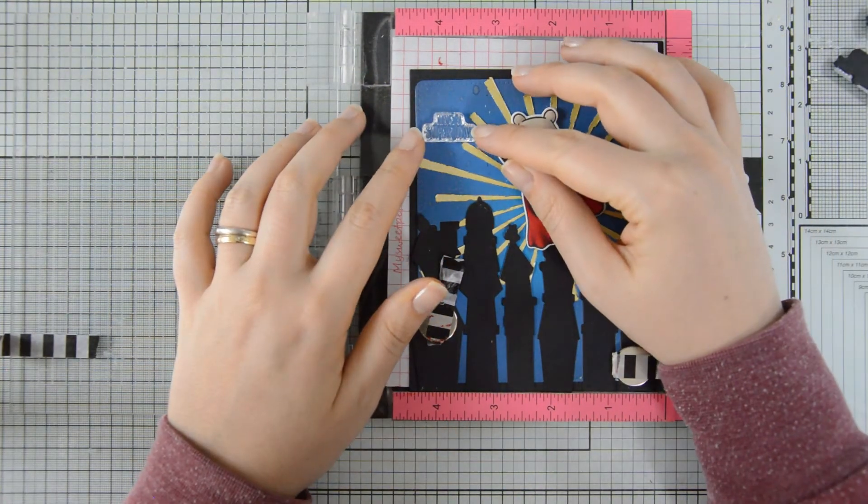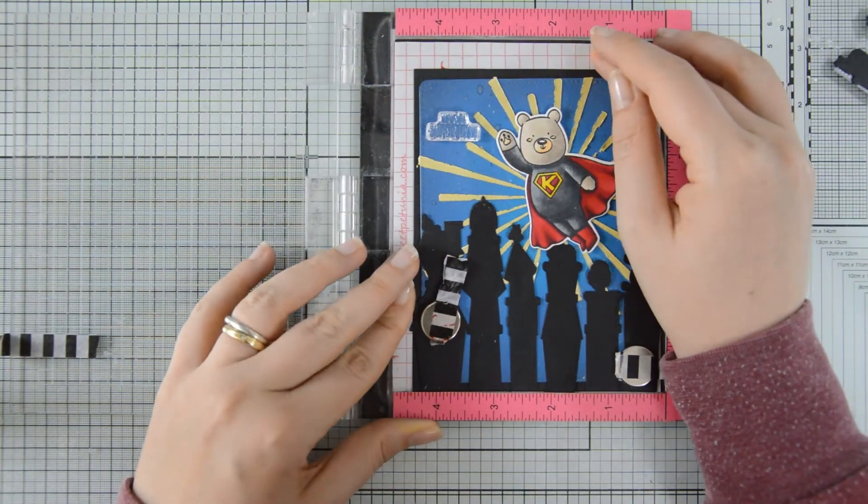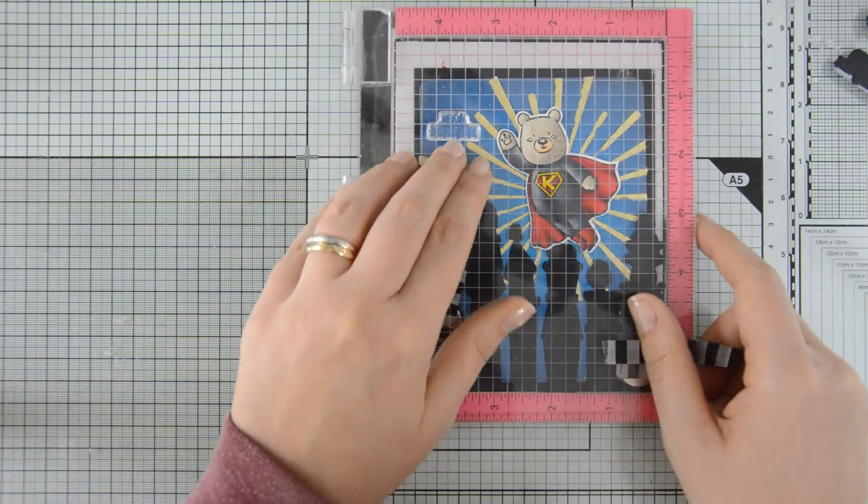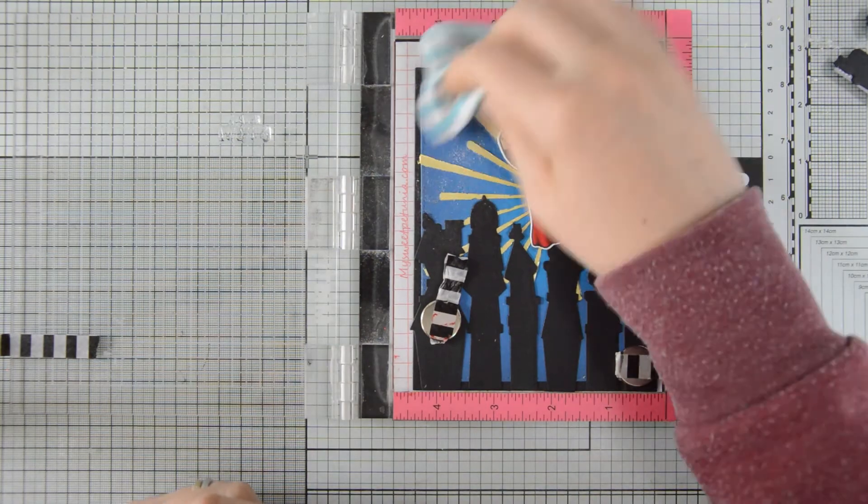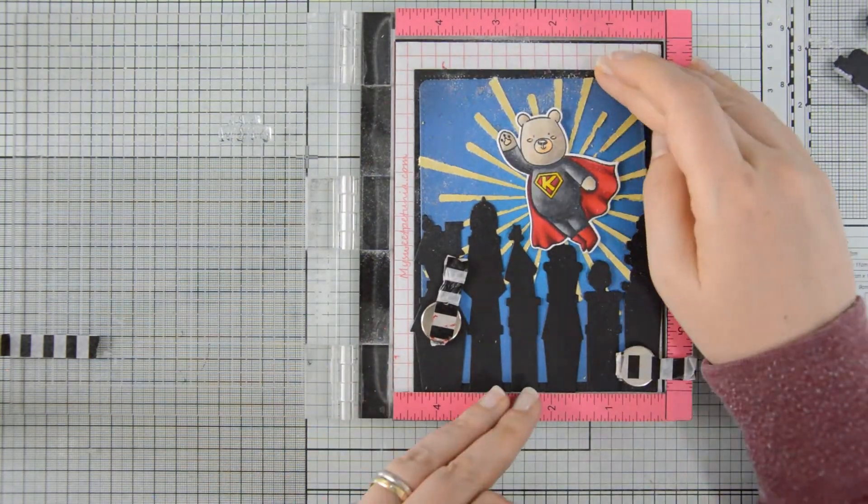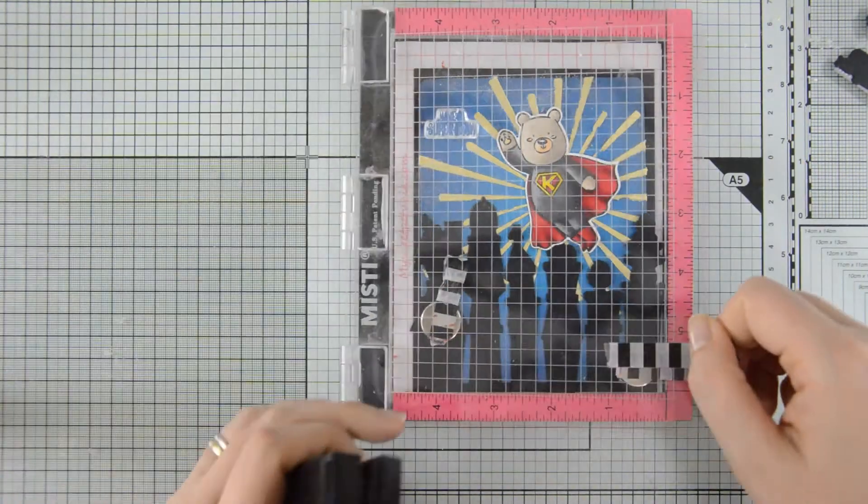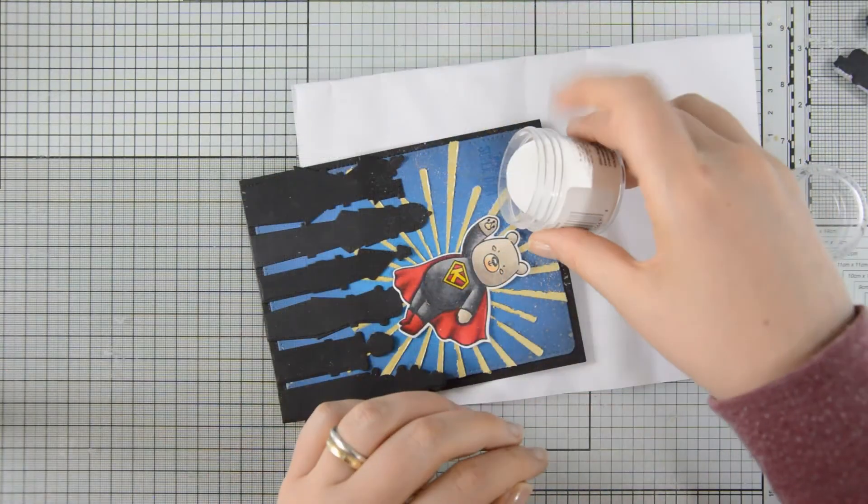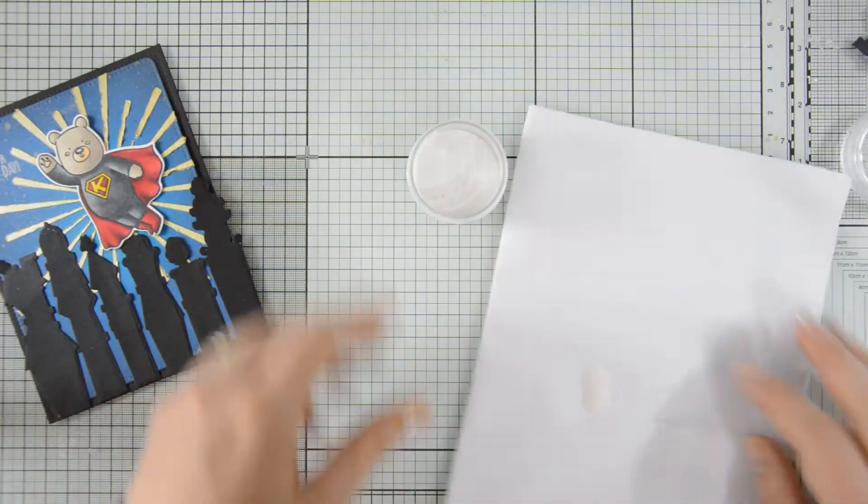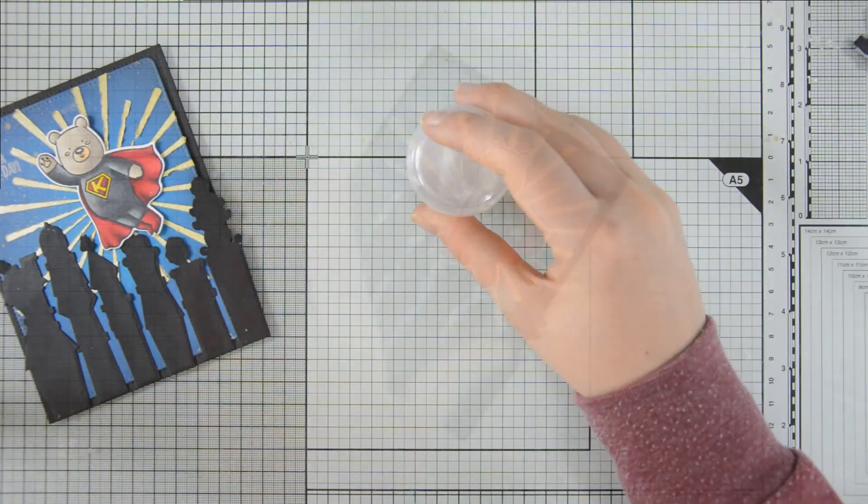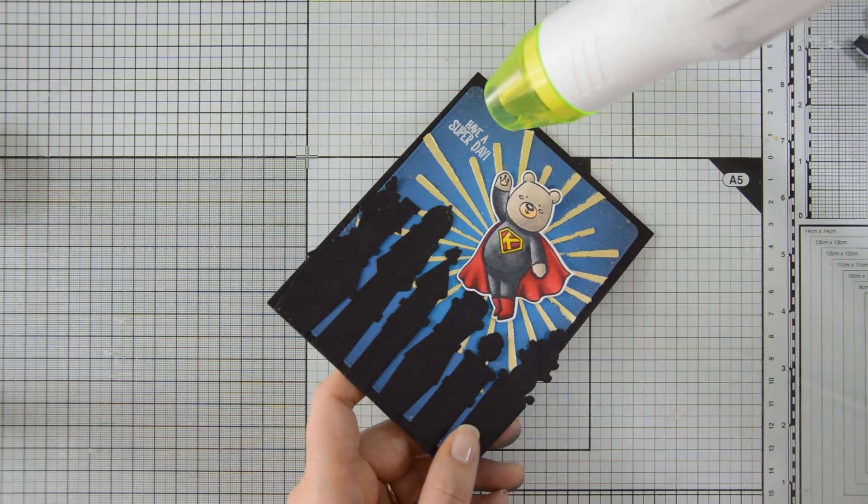For that I did some heat embossing with white embossing powder. I used one of the sentiments in the Cobby the super bear stamp set. This one reads have a super day. So I prepped my card with anti-static powder, I stamped the sentiment with Versa marking, and then I coated it with embossing powder and melted the embossing powder with my heat gun.